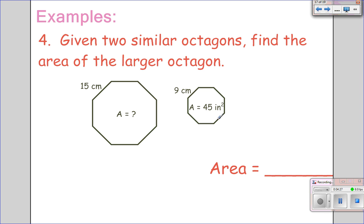Given two similar octagons, find the area, so that's a key word, of the larger octagon. First off, we can use these two sides to find a side ratio. 15 over 9, which 3 goes into both of those, so it reduces to 5 over 3. So, that's your side slash perimeter ratio.